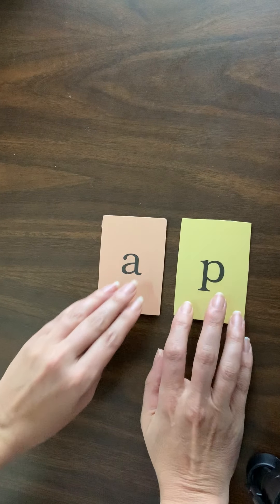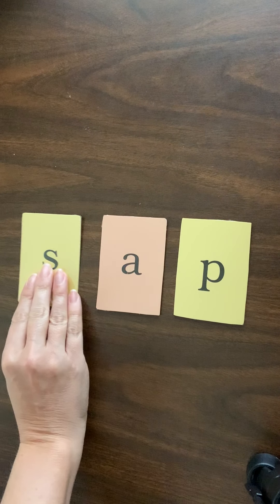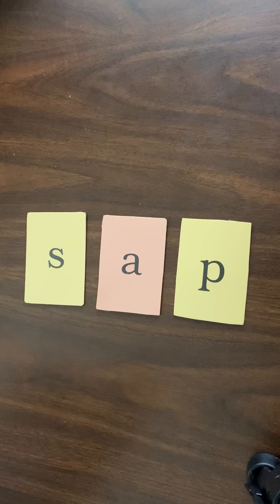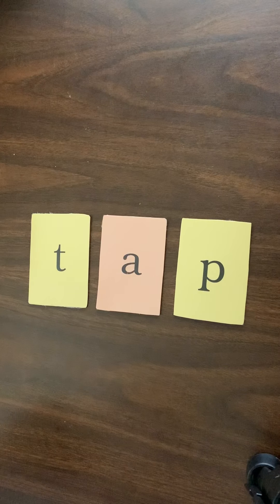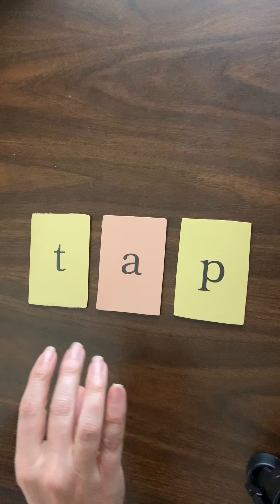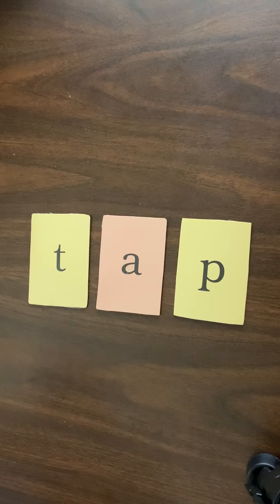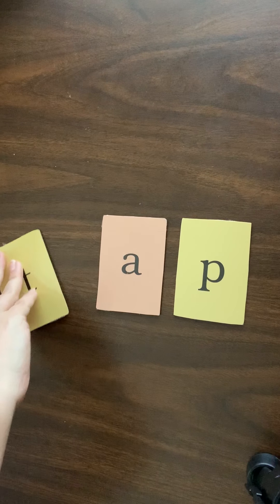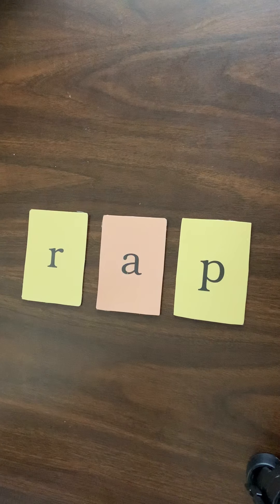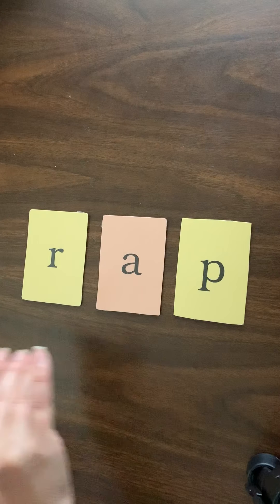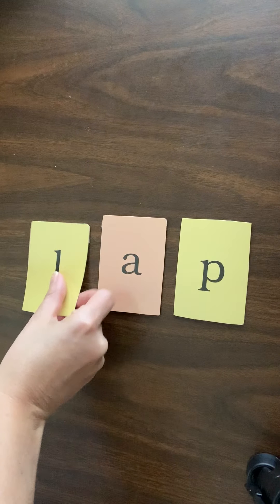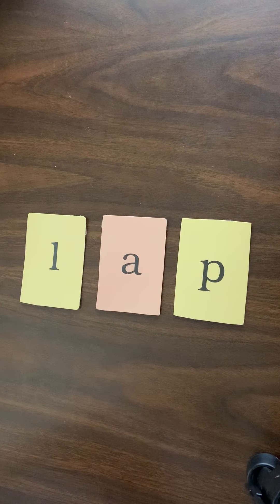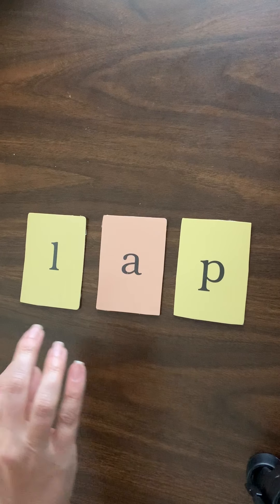Our new word family is 'ap.' If I put an s, this word is sap. If I remove the s and replace it with a t, what is this? If you said tap, you are correct. T-a-p, tap. If this says tap, I remove the t and I replace it with r — what is this? If you said rap, you are correct. R-a-p, rap. If this says rap, and I remove the r and I replace it with an l, what is this? If you said lap, you are correct. L-a-p, lap.